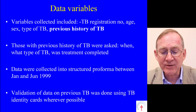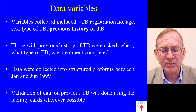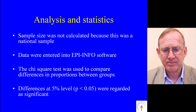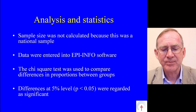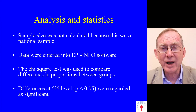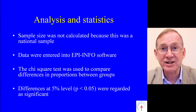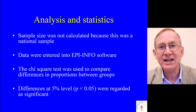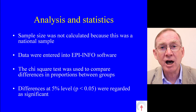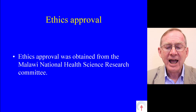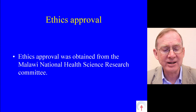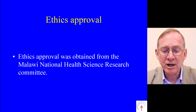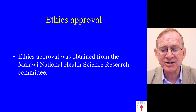Validation of data on previous tuberculosis was done wherever possible using TB identity cards. Analysis and statistics — Sample size was not calculated because this was a national sample. Data were entered into EpiInfo software. The chi-squared test was used to compare differences in proportions between groups, and differences at the 5% level — p less than 0.05 — were regarded as significant. Ethics approval was obtained from the Malawi National Health Science Research Committee.